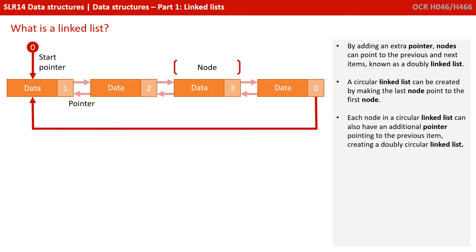And again, each node in a circular linked list can also have an additional pointer pointing to the previous item, creating a doubly circular linked list.